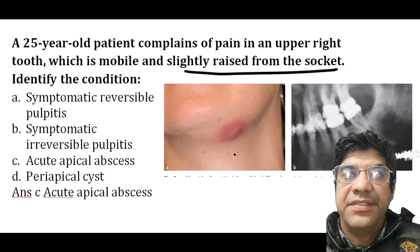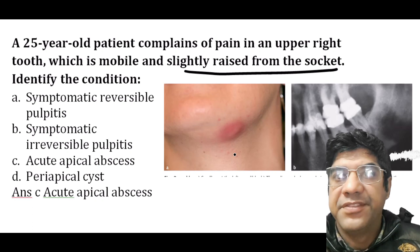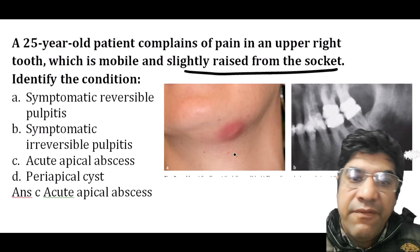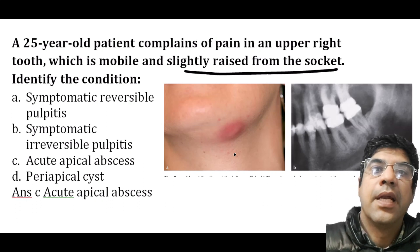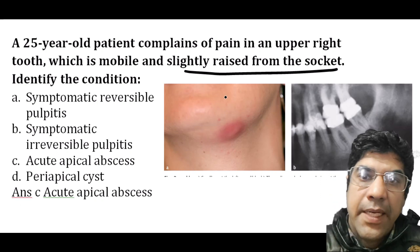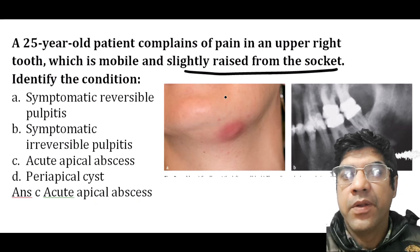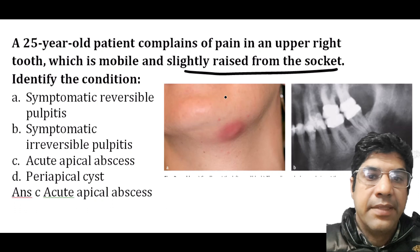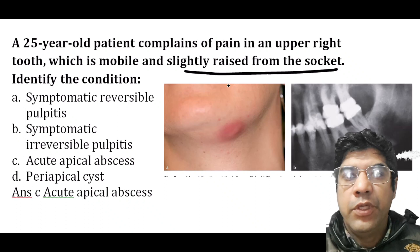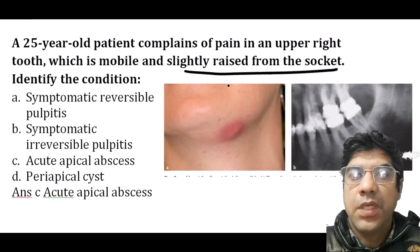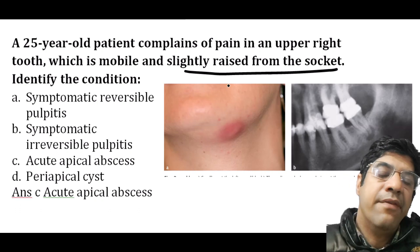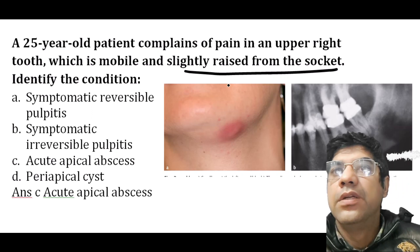The abscess indicates a significant infection in the pulp that has spread to surrounding tissues, causing inflammation, pressure, pain, swelling, and elevation of the tooth within the socket. The destruction of the periodontal ligament leads to increased tooth mobility. Swelling due to the abscess exerts pressure on the tooth, causing it to be slightly raised or elevated from the socket. The answer is C.